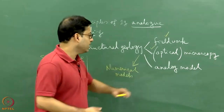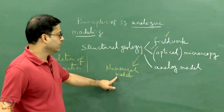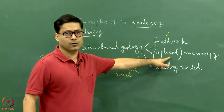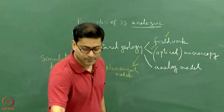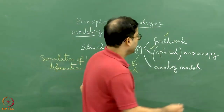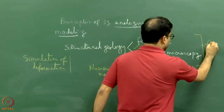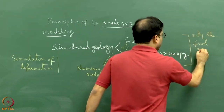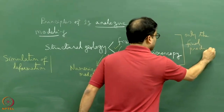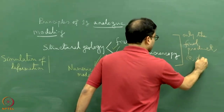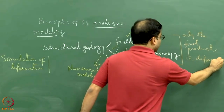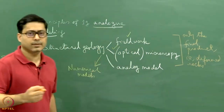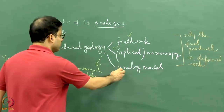The progressive deformation found in analog models and numerical models will not be possible to see in field work, and it will not be possible to observe through optical microscopy. In those two cases we only see the final product — the deformed rocks, and the deformation is seen only as a final state. But how it happened with time? Only these two means — analog and numerical modeling — will be helpful to us.